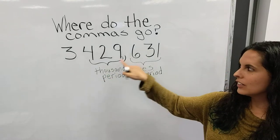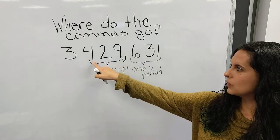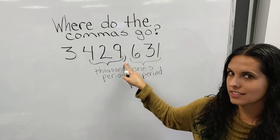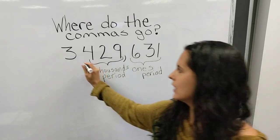So when you see the comma here and you're reading this number, it would be 429,000 and you would say the word thousand on this comma. So we put the comma here.